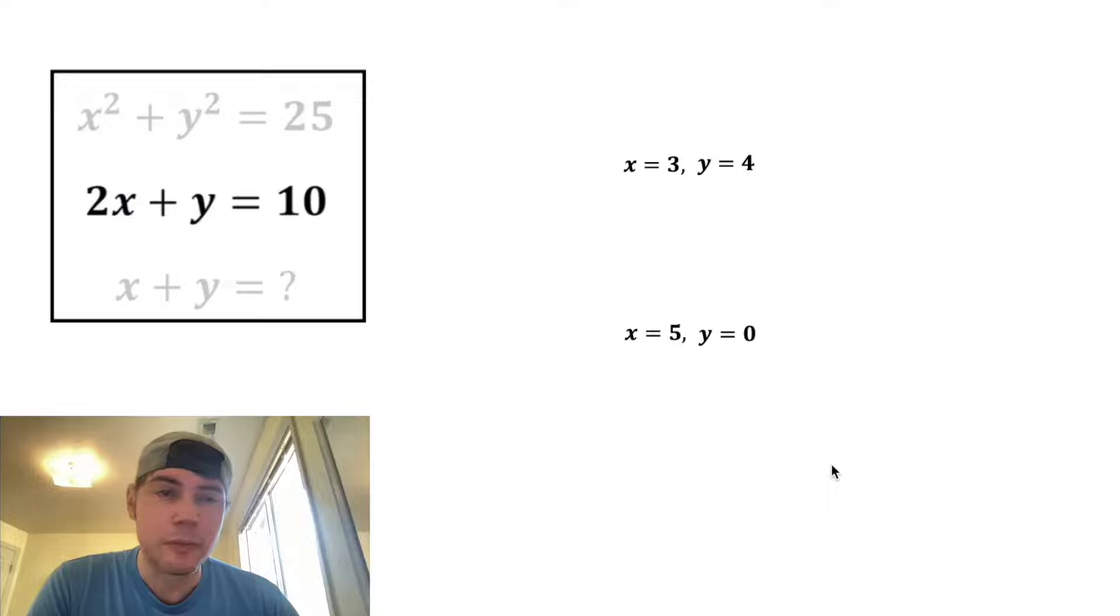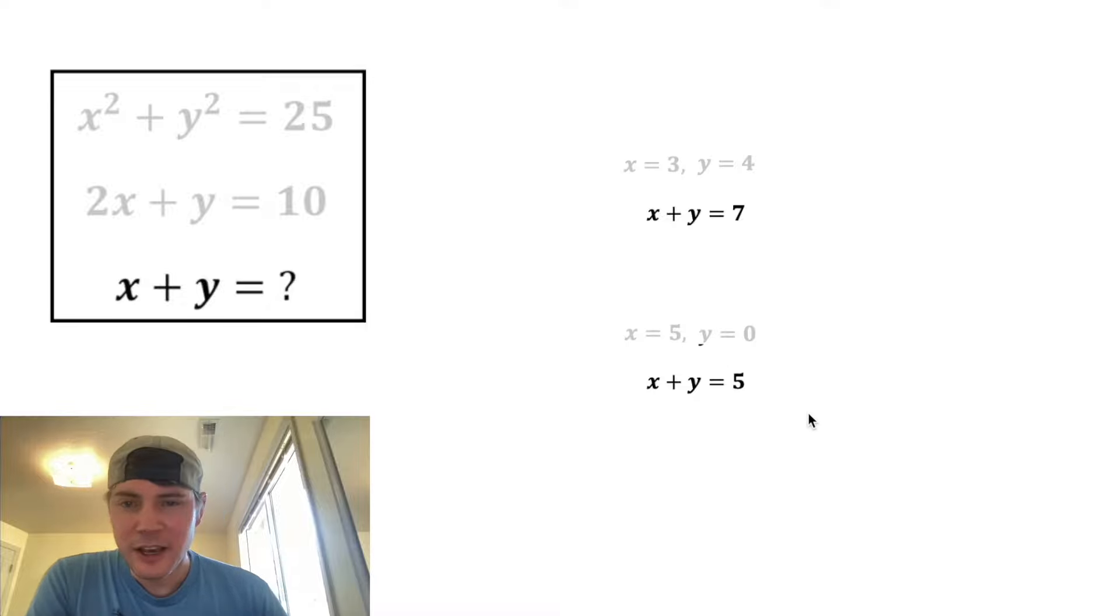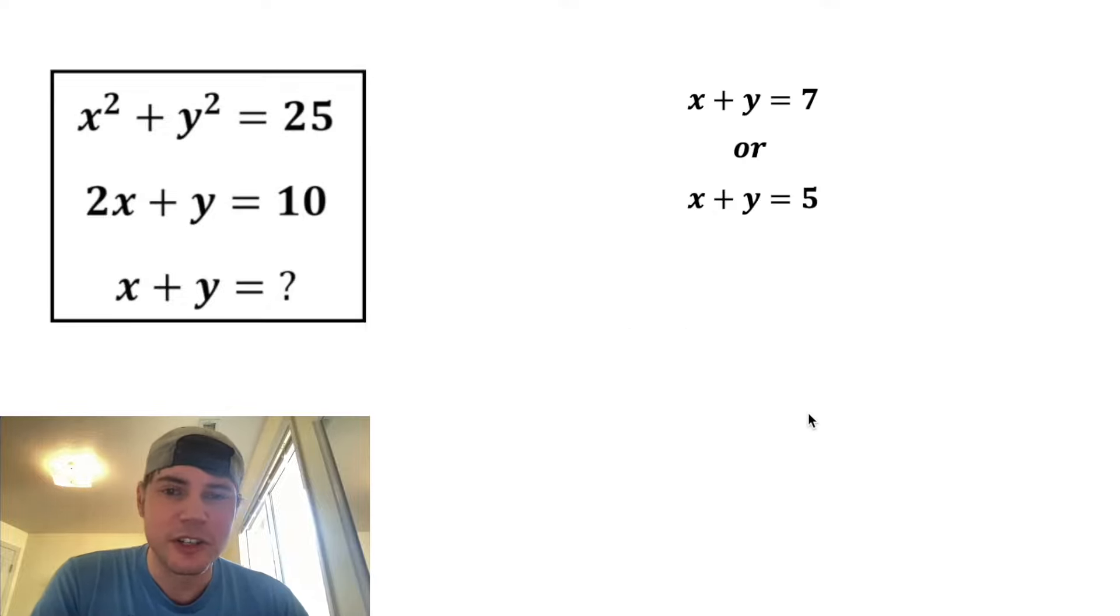These are our two possible scenarios, and we want to evaluate x plus y for each of these scenarios. For the first scenario, x plus y ends up being three plus four, which is equal to seven. And for this scenario, x plus y is five plus zero, which is equal to five. And these are the two possible answers to the question, x plus y equals seven, or x plus y equals five.